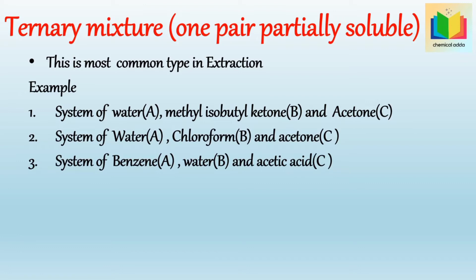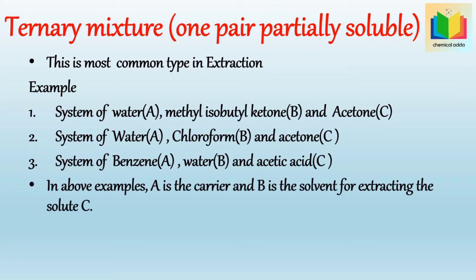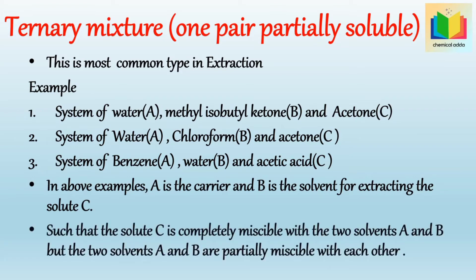In the above examples, the feed contains components denoted by A and C, and component B is used as a solvent. That is, A is the carrier and B is the solvent for extracting the solute C, such that the solute C is completely miscible with the two solvents A and B, but the two solvents A and B are only partially miscible with each other.